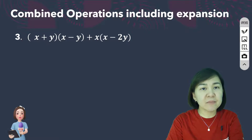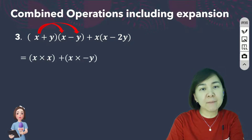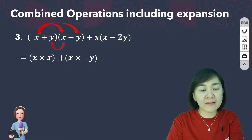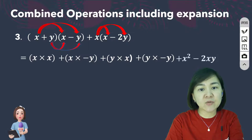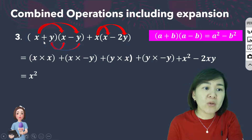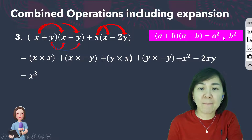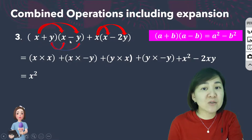Another example: bracket X plus Y times bracket X minus Y, plus X times bracket X minus 2Y. We expand the first two expressions. X times X plus X times negative Y, then Y times X, then Y times negative Y. For the second part, X times X gives X squared, and X times negative 2Y gives negative 2XY. Notice the pattern - one positive and one negative - this is the A squared minus B squared shortcut, so X plus Y times X minus Y gives X squared minus Y squared, since negative XY plus XY equals zero.